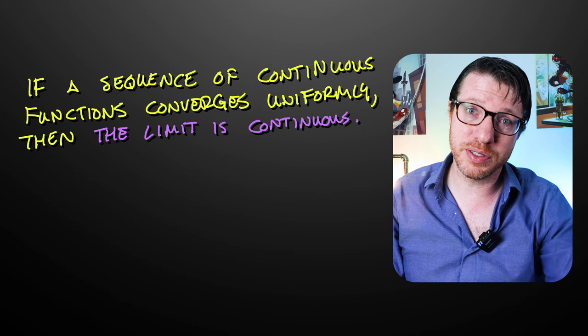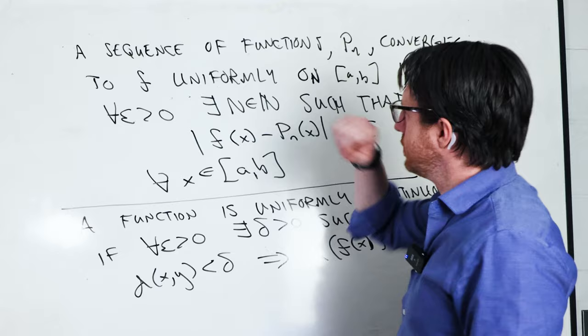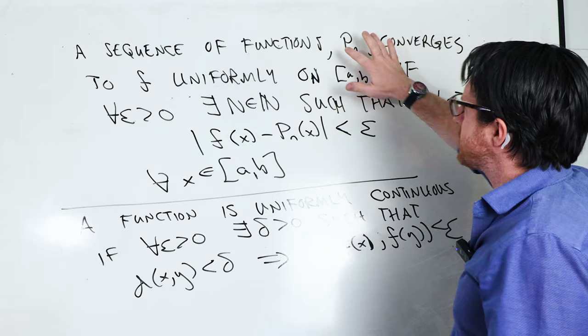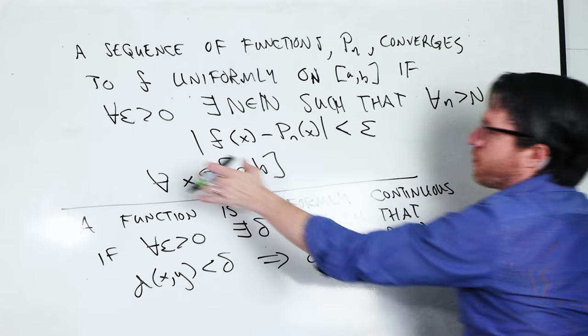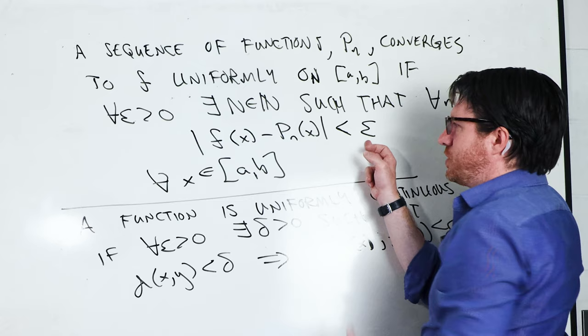One of the key ideas of uniform convergence is that if you have a uniformly convergent sequence of continuous functions, then the function they're converging to must also be continuous. We say a sequence converges to F uniformly on a closed interval if for all epsilon greater than 0, there is one N that does not depend on x, such that for all n bigger than this N, the functions are epsilon-close. This N works for all x in [a, b].